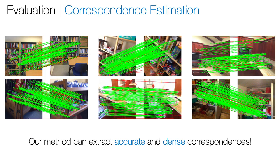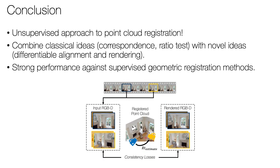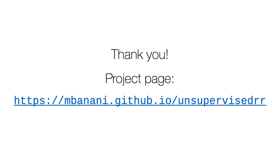We can extract accurate and dense correspondences despite only using a simple ratio test for filtering, but we're still challenged by cases where there's plain and repetitive texture, as well as limited overlap between the two frames. In conclusion, we propose an unsupervised approach to point cloud registration that learns from RGBD video datasets. Our approach combines classical ideas such as correspondence and ratio test with novel ideas such as differentiable alignment and rendering. Our approach shows strong performance even against supervised geometric registration methods, despite being unsupervised. Thank you, and please visit our project page for more information.